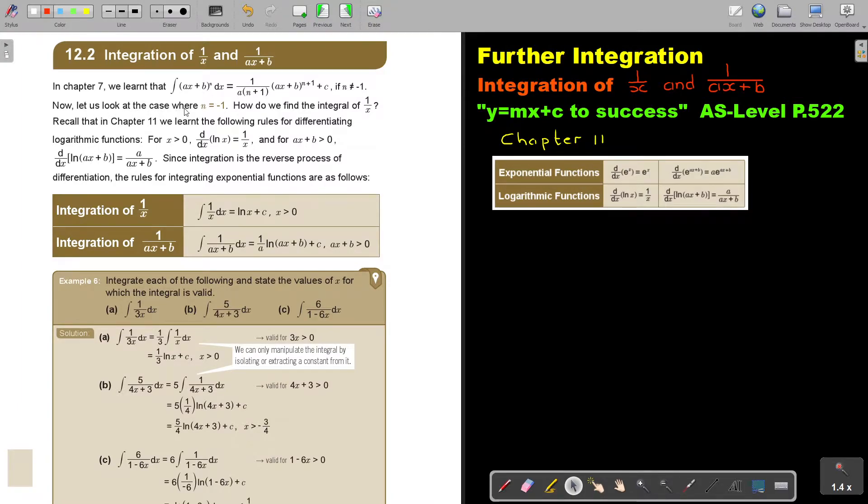Now, let us look at the case where n is equal to negative 1. How do we find the integral of 1 over x? Recall that in chapter 11, we learned the following rules for differentiating logarithmic functions. When x is bigger than 0, d over dx of ln x is 1 over x. And I took it out of the summary of chapter 11. If we differentiate, we get 1 over x.